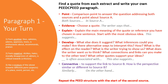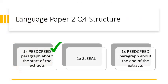Now it's your turn. Find a quote from each extract and write your own comparative paragraph using the P-A-C structure. Write a P structure to begin, all about Source A, then include a connecting sentence to support your link to Source B — think about how the perspective is similar or different — then another P structure for Source B. If you need any help with thinking about the writer's perspective, there are some keywords on the left-hand side of the screen. Pause the video and come back when you're done. That's your first paragraph complete for Language Paper 2, Question 4.